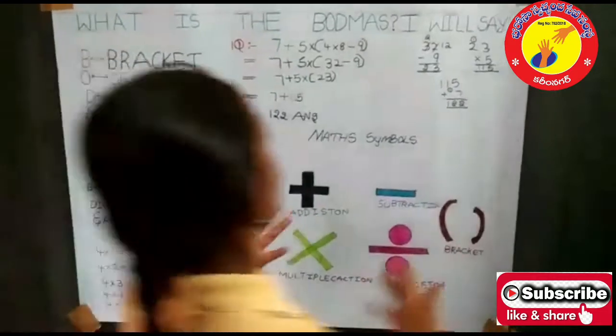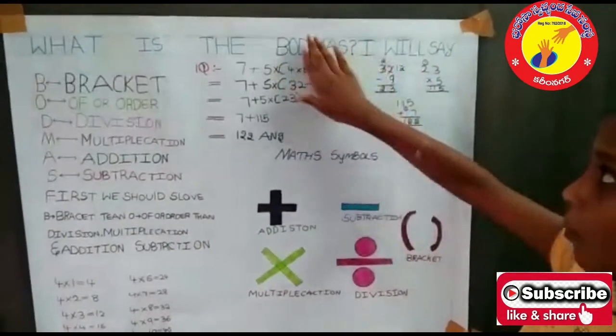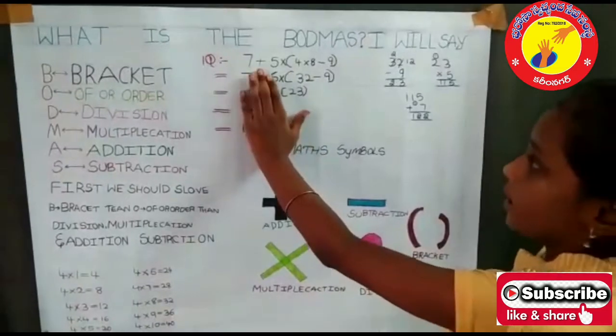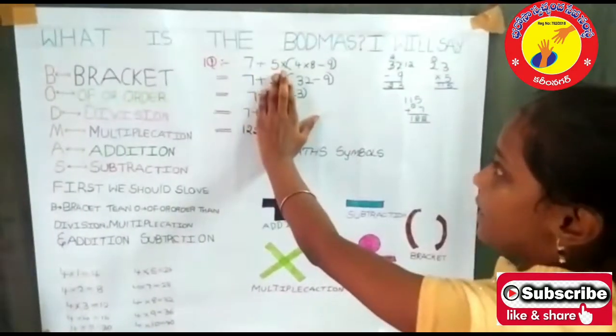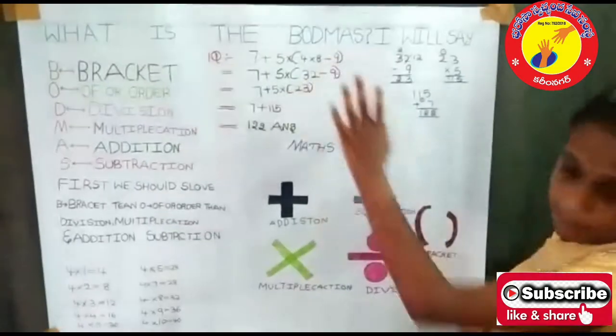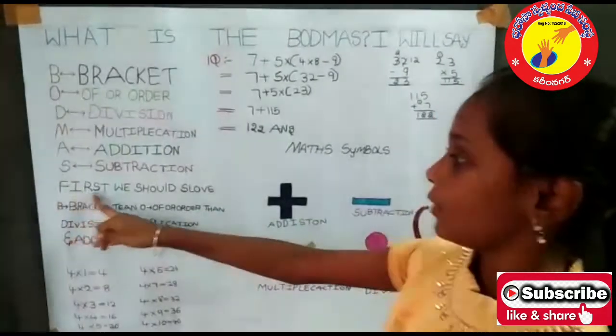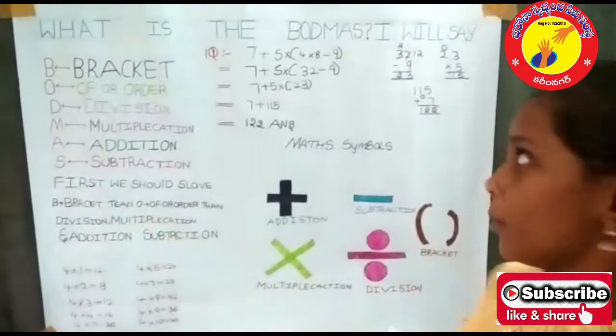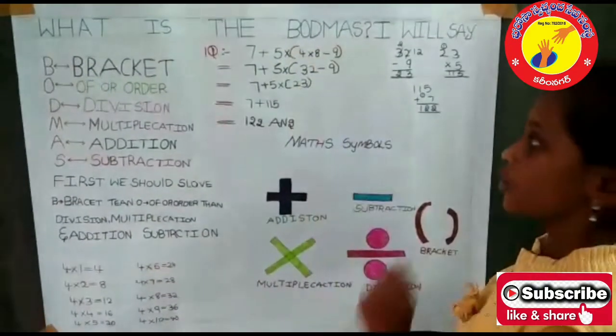So here I gave one problem of BODMAS. Here you see 7 plus 5 into bracket 4 into 8 minus 9. First we should solve with the bracket form. So bracket form first we should solve.